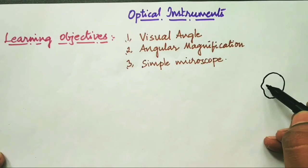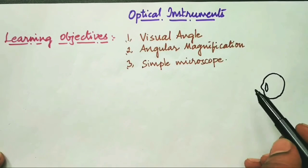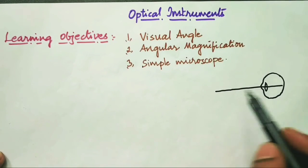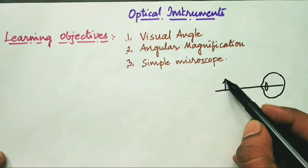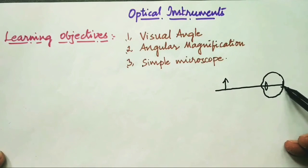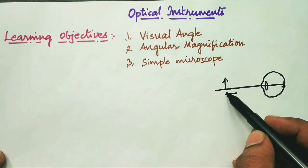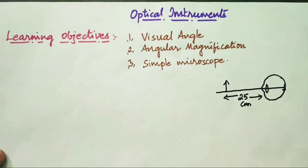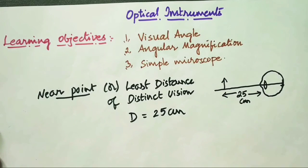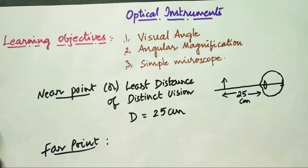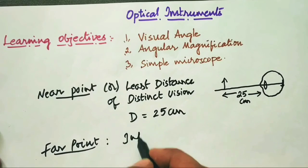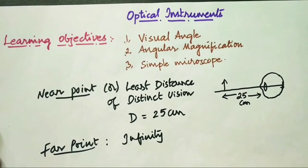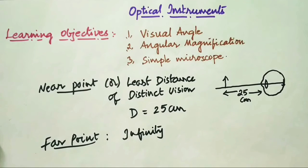Let us look at the previous knowledge required for understanding the simple microscope. The first definition is near point. The human eye has a convex lens that forms an image on the retina. The comfortable distance at which we can see an object without any strain is 25 centimeters — this is called the near point, also known as the least distance of distinct vision. Far point is the maximum distance the eye can accommodate and form an image on the retina, which is approximately infinity for a human eye.